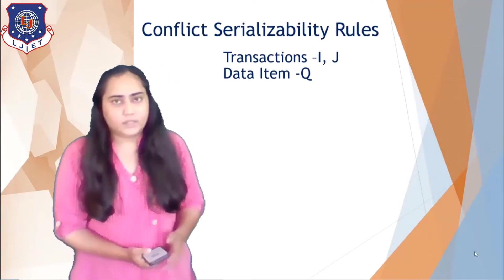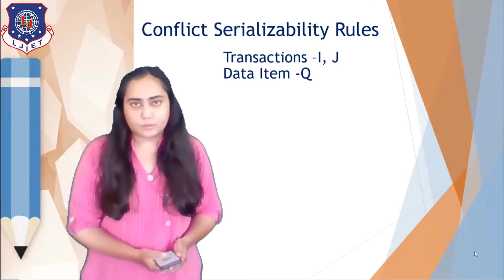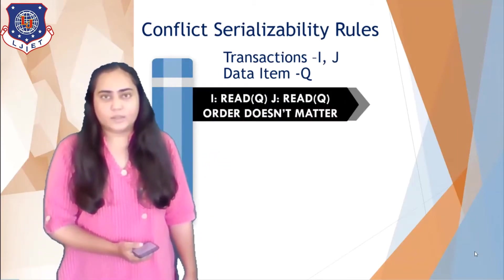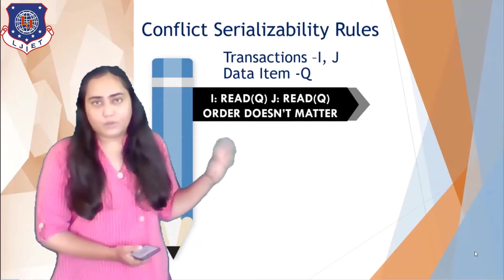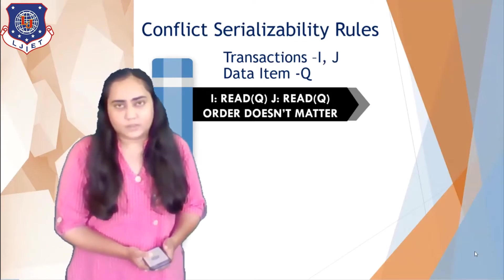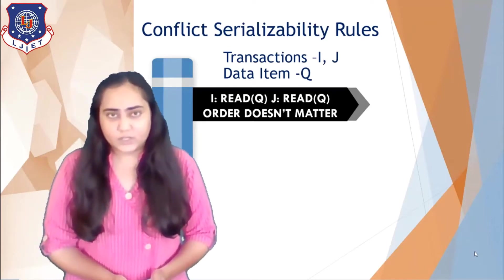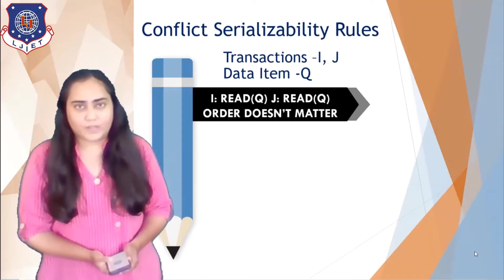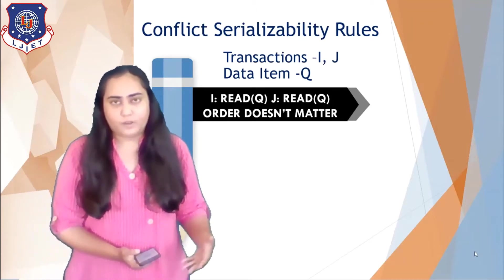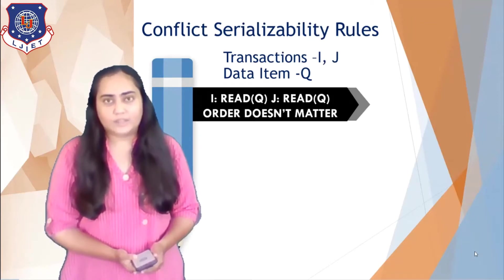Consider that you have two transactions i and j and there is one data item q. The first rule is that if i is reading q and j is also reading q, then the order of those two operations does not matter. This is because they are only reading the values and not changing q, so it shouldn't matter whether q is read by i or j first.